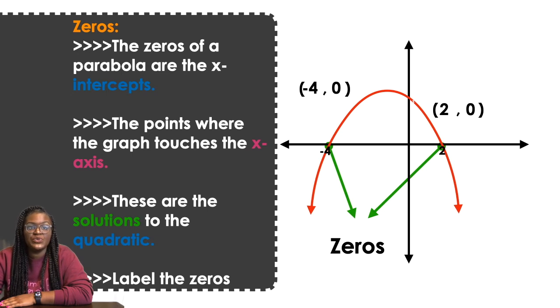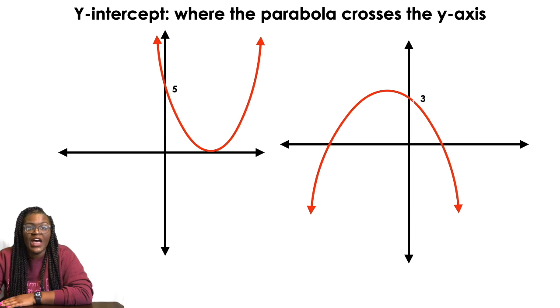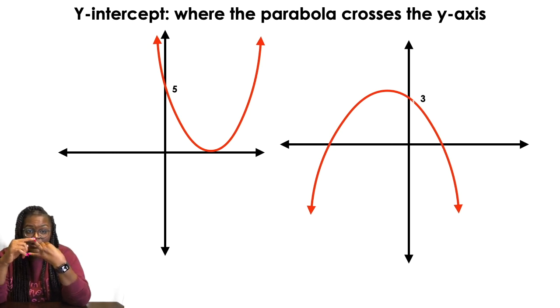Both of those, negative 4 and positive 2, would be zeros of the solution: so negative 4 comma 0 and then 2 comma 0. The last characteristic that we're going to learn about are y-intercepts. Y-intercepts are where the graph touches the y-axis.